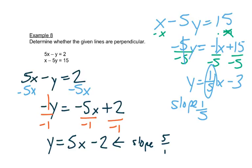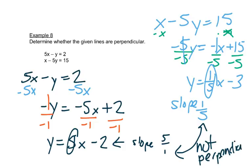So if we look at these two slopes, we can see that they're reciprocals, but the problem is that they're both positive, so they're not perpendicular. They have to be opposite signs also.